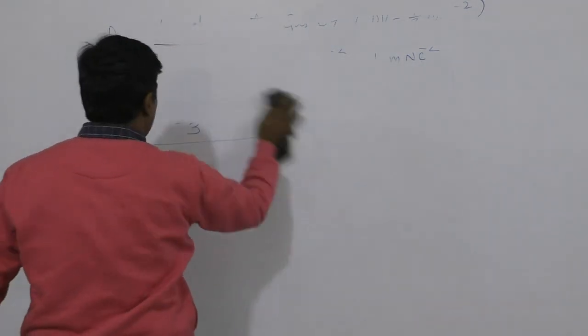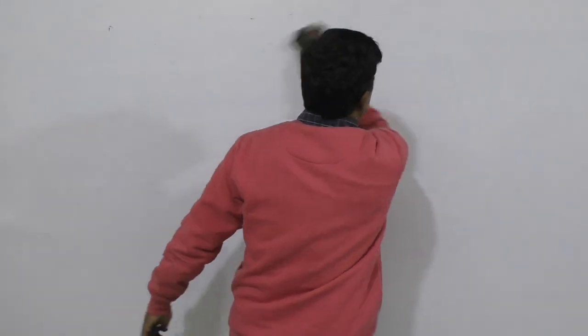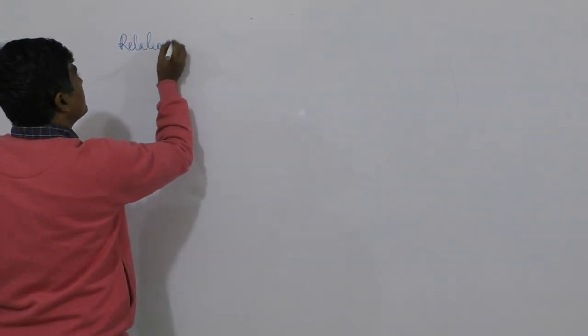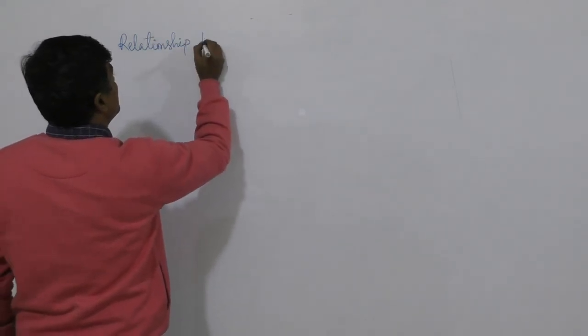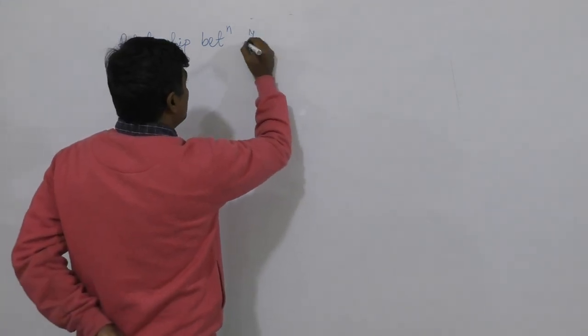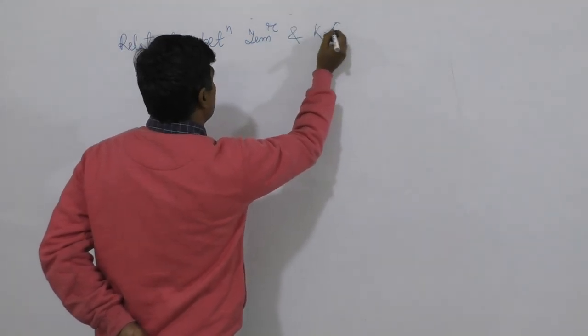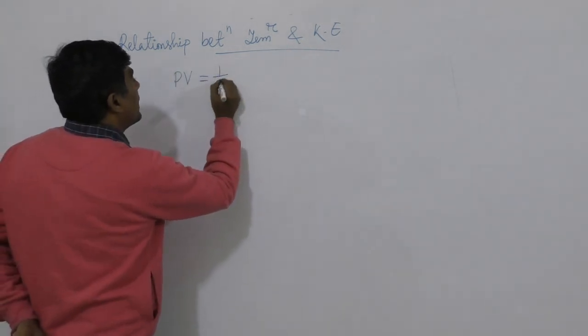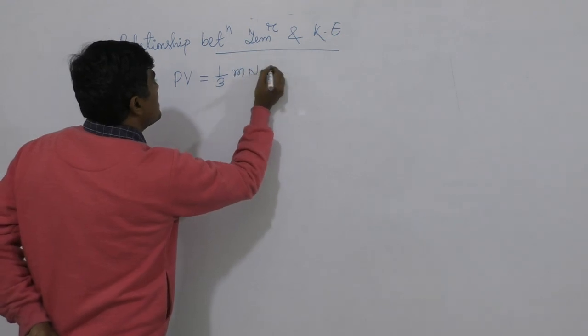Before we move towards derivation of gas laws, let us establish a relationship between temperature and kinetic energy. We know PV is equal to 1 by 3 MNc̄².